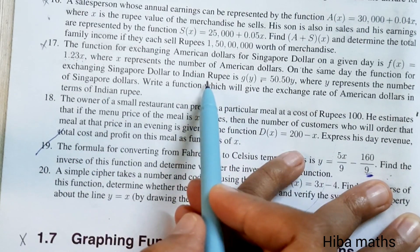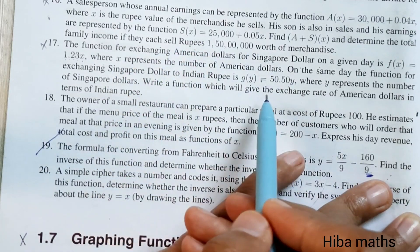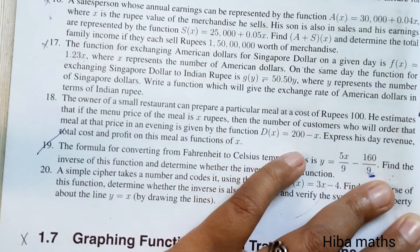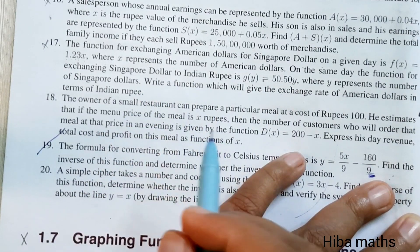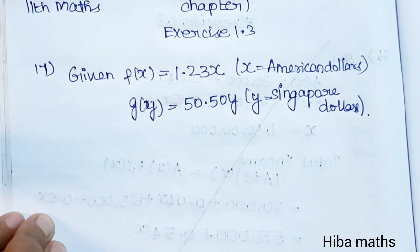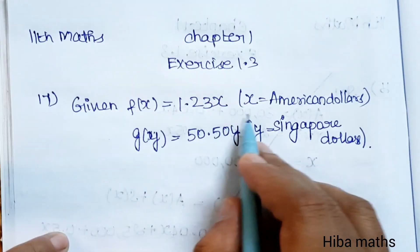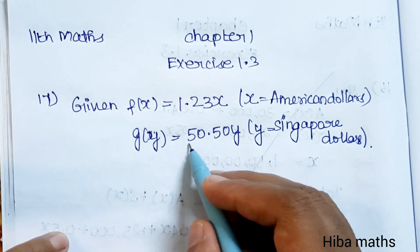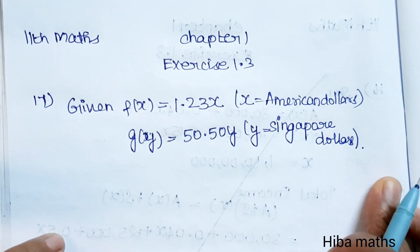Indian rupee is g of y. We substitute f of x into g of y. We have f of x equals 1.23x, where x is American dollar, and g of y equals 50.50y, where y is Singapore dollar.